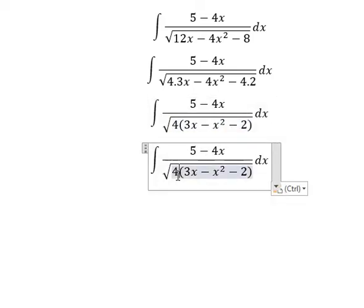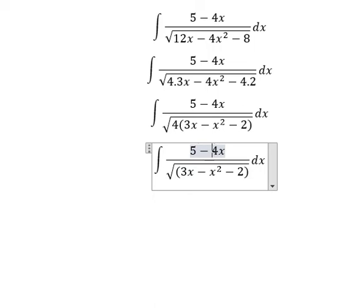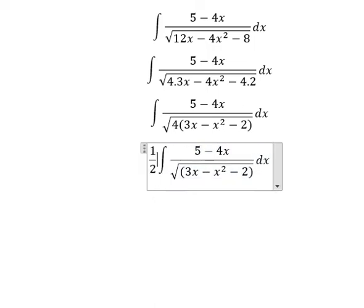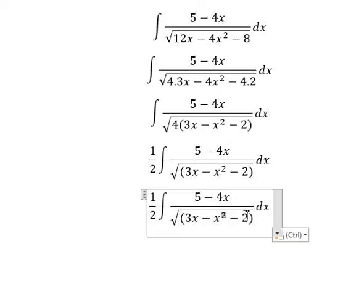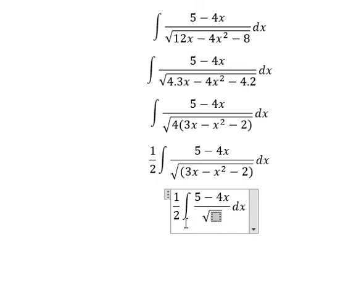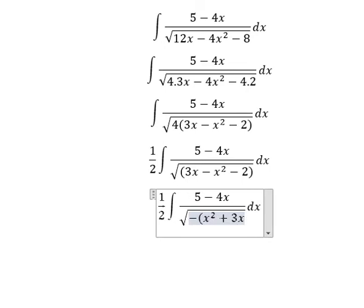The square root of number 4 is number 2, so I will put number 2 outside. Next, I will close the parentheses between x squared and 3x. You will have negative x squared plus 3x, and I will put negative number 2 in here.